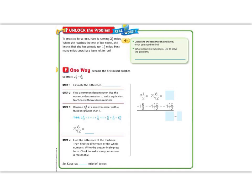Alright 5th graders, let's begin this lesson by reading the Unlock the Problem. It says, to practice for a race, Kara is running 2.5 miles. When she reaches the end of her street, she knows that she has already run 1.56 miles. How many more miles does Kara have left to run?